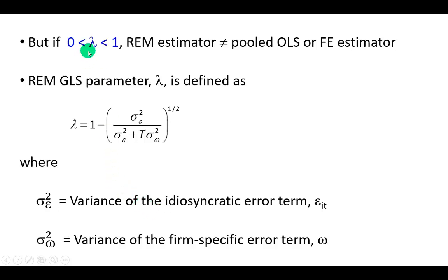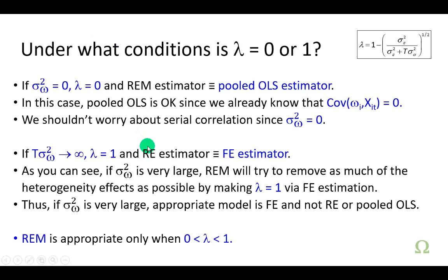But if lambda is between zero and one, then random effects estimator is neither going to be equal to pooled OLS nor fixed effects estimator. And by the way, this is the definition of lambda. And so as you can see, lambda would be zero if the variance of the firm specific error term is zero. And that's when random effects estimator defaults to pooled OLS.